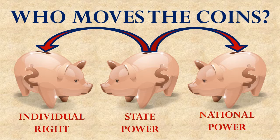For example, before Roe v. Wade is decided, state governments control whether or not a woman is allowed to get an abortion. Then, arguably, with the Roe v. Wade decision, that power is moved to the individuals — now a woman gets to decide. But arguably it's also been moved to the national government, because the United States Supreme Court, which is part of the national government, is deciding whether the woman could do that. Regardless of where the coin is moved, recognize that it's been moved by somebody — and the question is, did the right person move it, and if not, what's the problem?